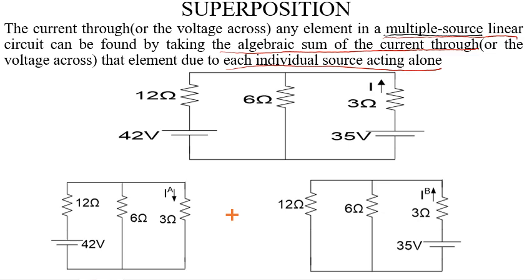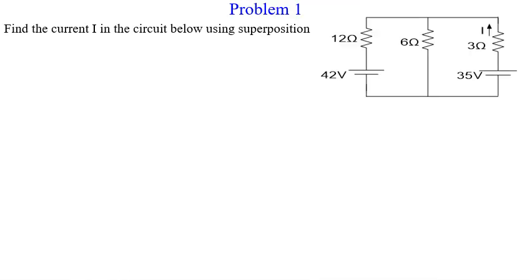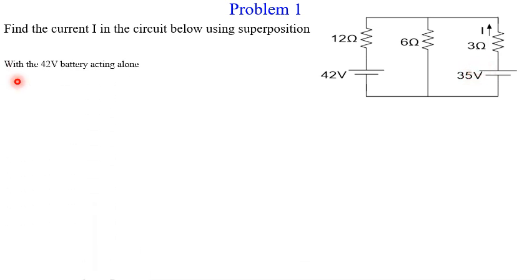In this video I'll solve two examples. Our first problem says: find the current IA in the circuit below using the superposition theorem. This is the circuit I used in our explanation. To find the current, as explained, we take each voltage source acting alone. We start with when the 42-volt battery is acting alone.